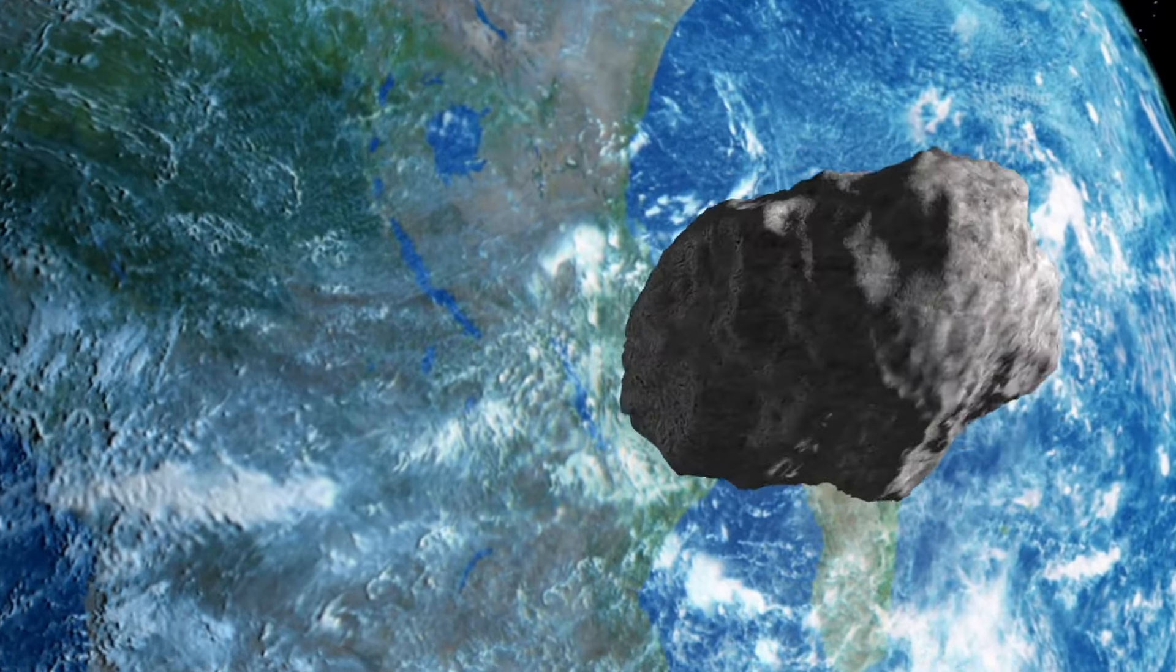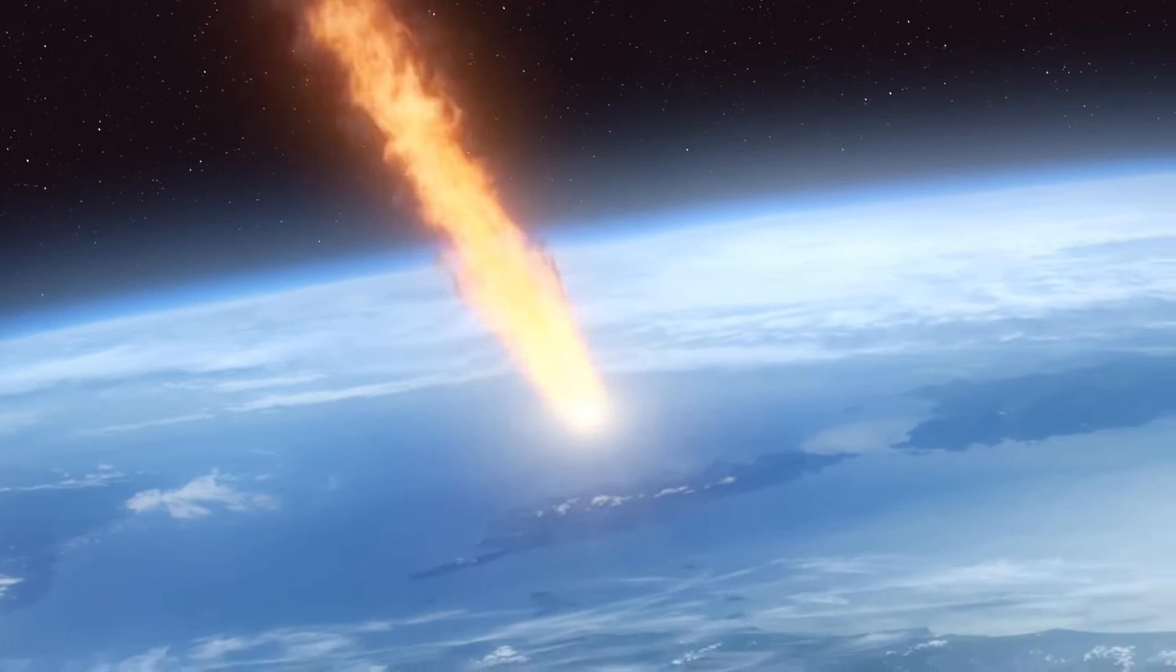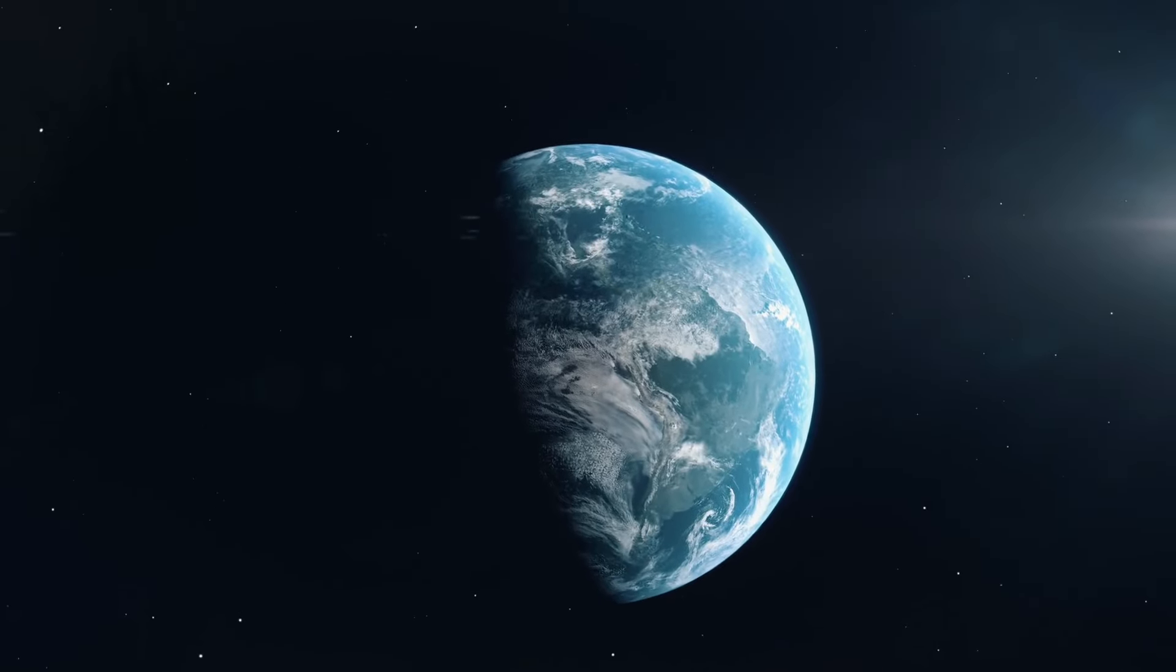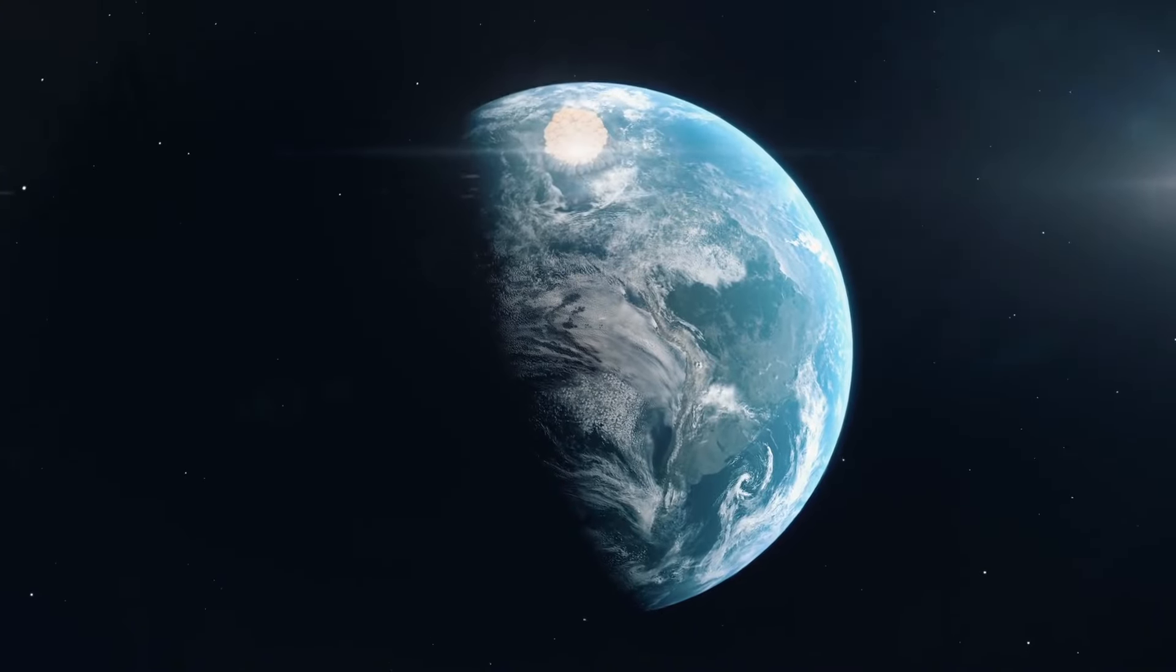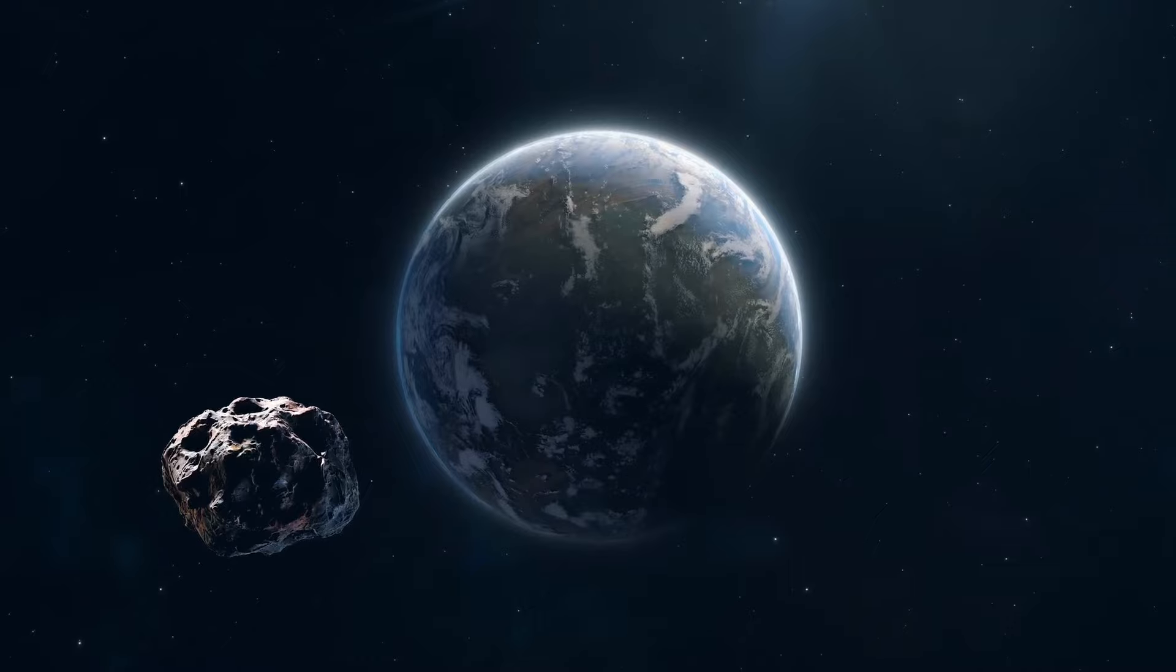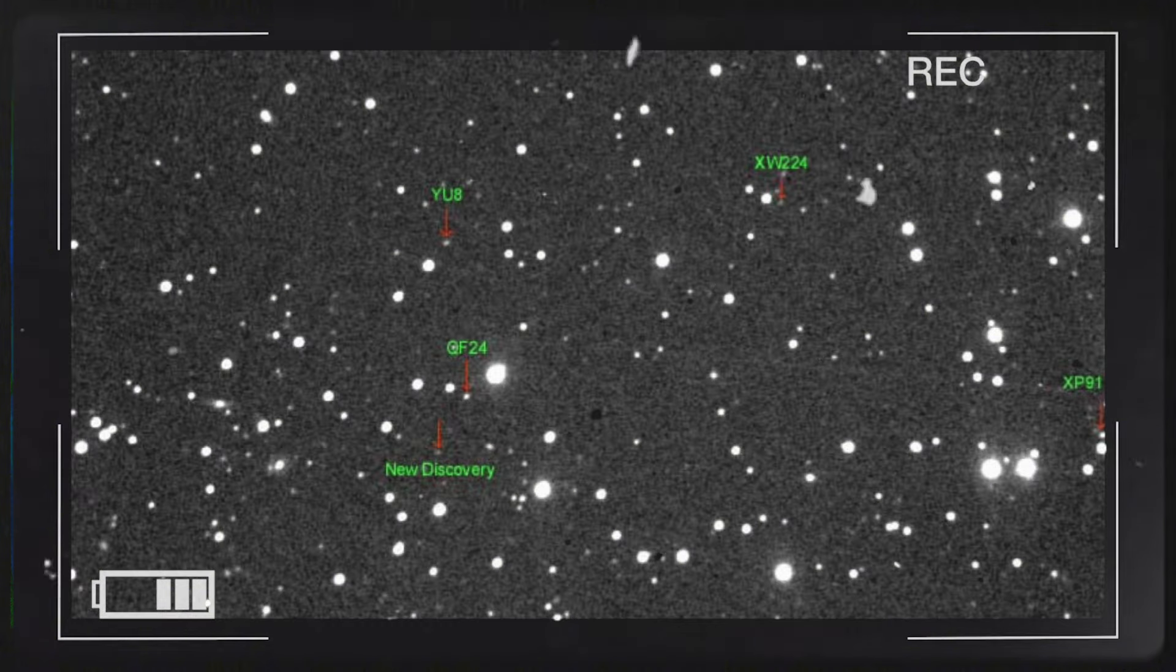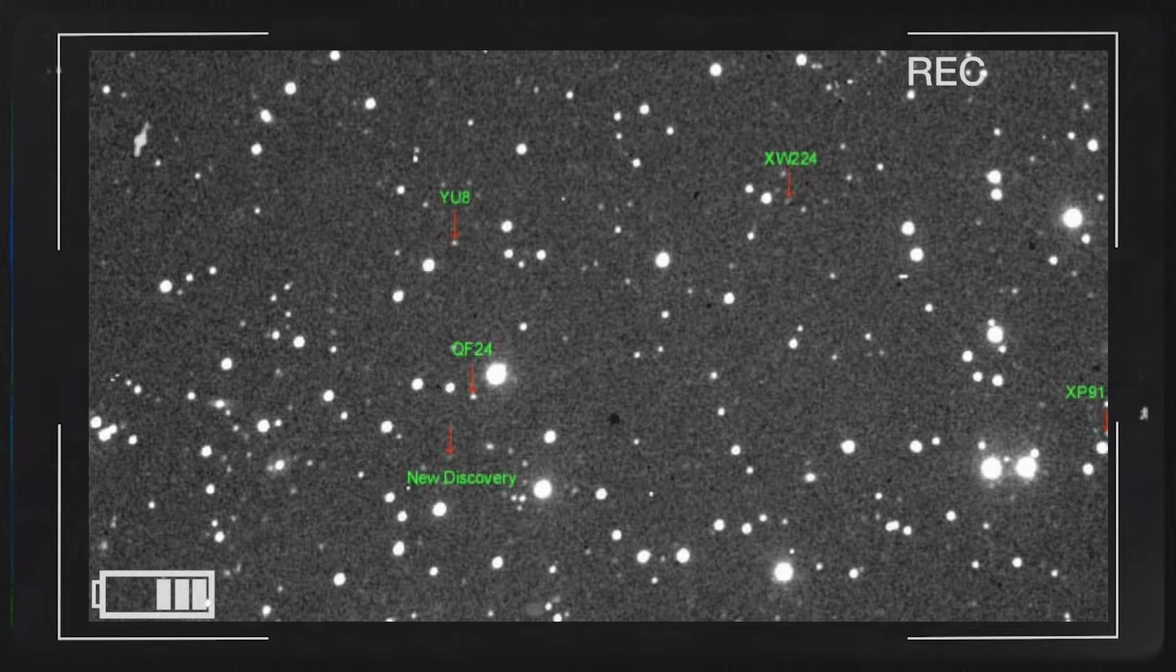Although it sounds like a groundbreaking event, this isn't an astronomical first. Earth has occasionally borrowed asteroids in this way. Smaller celestial objects like 2024 PT5 are sometimes caught in our planet's gravitational influence, becoming temporary moons. What makes this event special is how rare and brief these encounters are and how difficult it can be to detect them. In fact, our understanding of these temporary moons is relatively recent. It was only about 12 years ago, in September 2006, when astronomers from the Catalina Sky Survey in Arizona identified another such object orbiting the Earth.